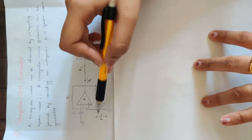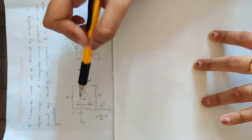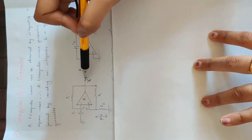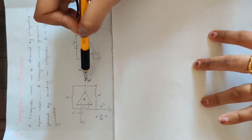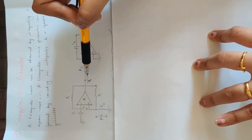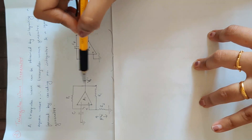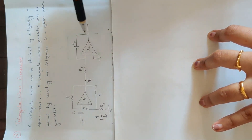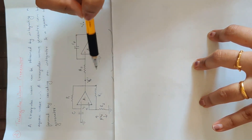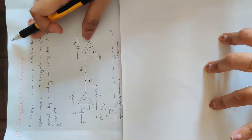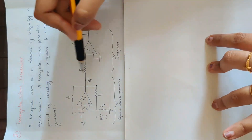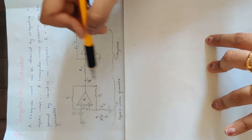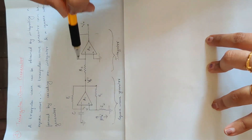Now, for the square wave generator, we have components RC, R1, and R2. The output voltage V0' represents the integrator output. This integrator circuit takes the output of the square wave generator as its input.